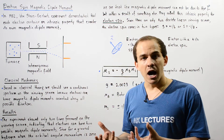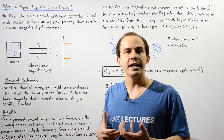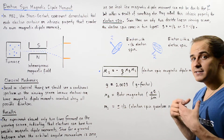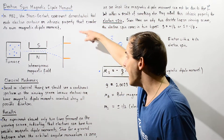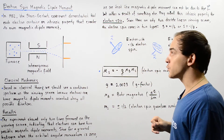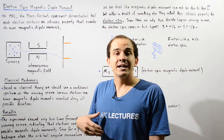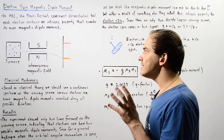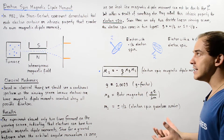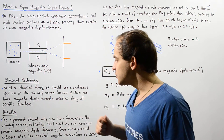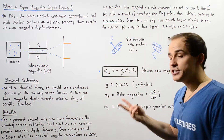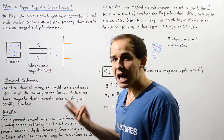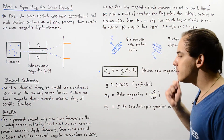What type of results should we expect based on classical theory? According to classical mechanics, we should see a continuous distribution — a continuous spectrum — of atoms falling everywhere on the viewing screen, because classically electrons can have any orientation of their magnetic dipole moment. However, what the two German physicists actually observed was only two lines formed on the viewing screen, indicating that atoms had only two possible orientations for their magnetic dipole moments.